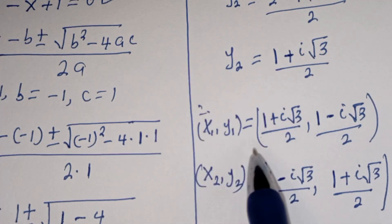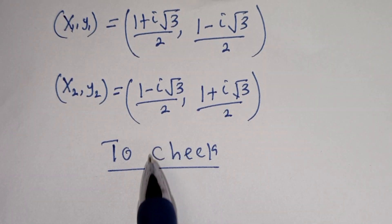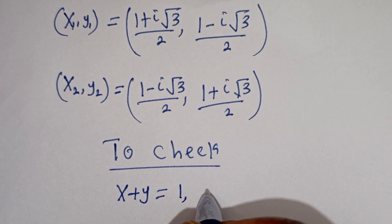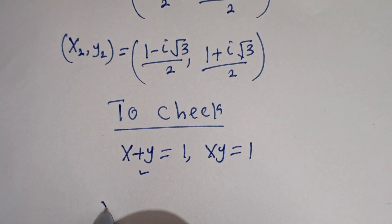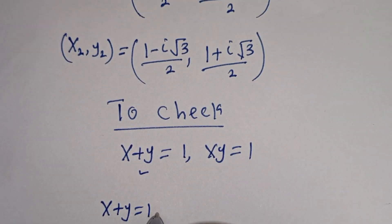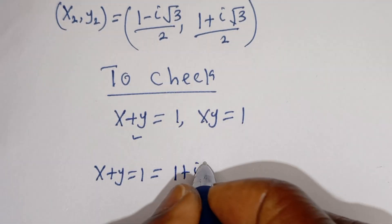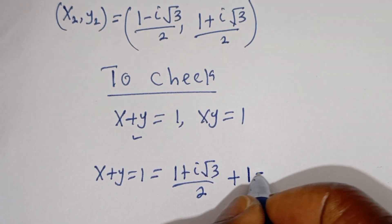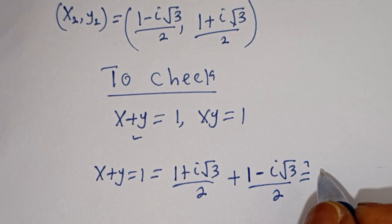We can check to confirm if this answer is right or wrong. Let's check. Now to check, we have the given equations: x plus y is equal to 1, and x times y is equal to 1. Using x1 and y1, for x plus y: this is 1 plus i root 3 divided by 2, plus 1 minus i root 3 divided by 2, and this must equal 1.